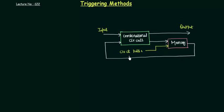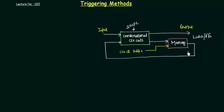A sequential circuit is nothing but the combinational circuit with memory. You have a combinational circuit, the input is given to it, and the output is generated. The state of this circuit is stored in the memory, and that memory is nothing but the latch or the flip-flop. I will explain the difference between latch and flip-flop in the next presentation. This memory — a latch or flip-flop — has a clock pulse given to it, which is the control input.